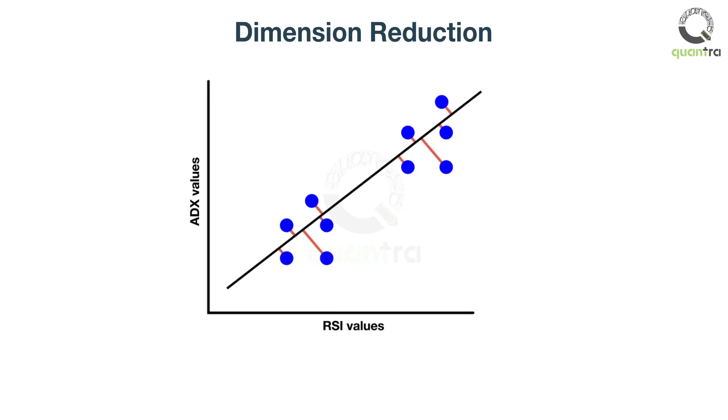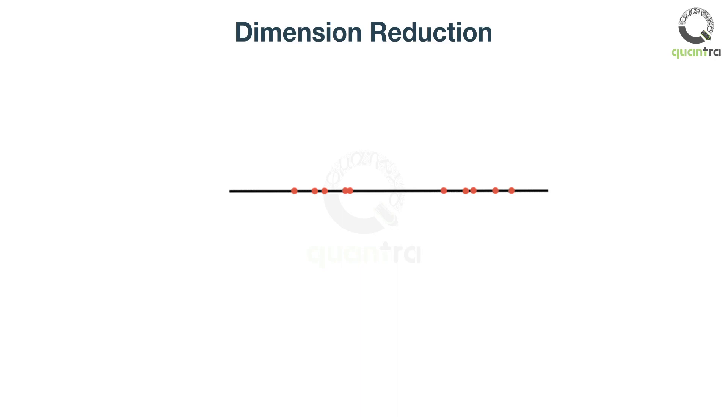You can see that even though the points are closer on the new axis, they can still be seen as distinct. You simply rotate or straighten this line to convert the data points into a single dimension. And you manage to preserve some information of both dimensions. This is essentially how the principal component analysis algorithm works.